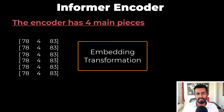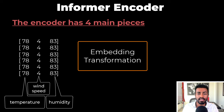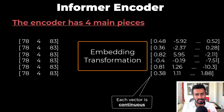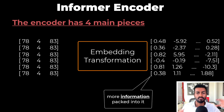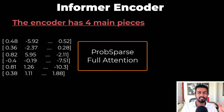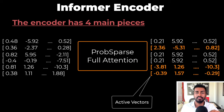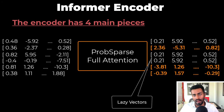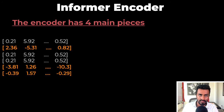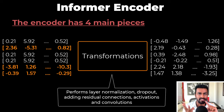The input to the informer is raw time series vectors. Each vector corresponds to a timestamp, and each entry in the vector corresponds to some information we have at that timestamp. The output is the same number of vectors, but each vector is now continuous and has more information packed into it. We then pass these continuous time series vectors into the prob sparse full attention unit. The output is the same number of timestamp vectors, but each vector has been transformed such that the more important vectors are highlighted. These transformations include layer normalization, dropout, residual connections, activations, and convolutions.